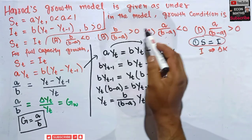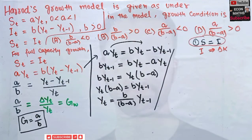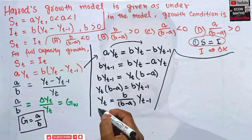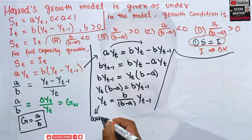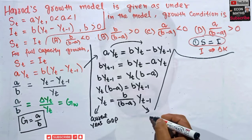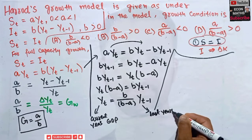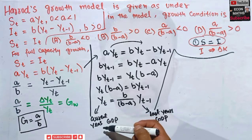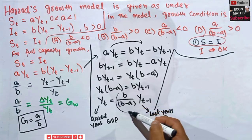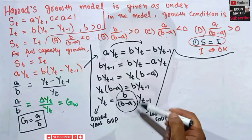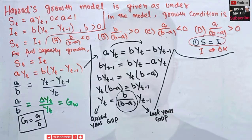Now we need to identify the growth condition. Y_t equals the term b/(b-a) multiplied by last year's GDP Y_{t-1}. For the current year's GDP to be greater than last year's GDP — i.e., for growth to occur — this term b/(b-a) should be greater than 1.